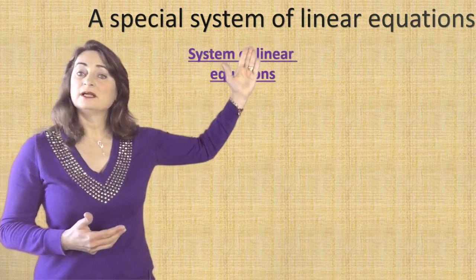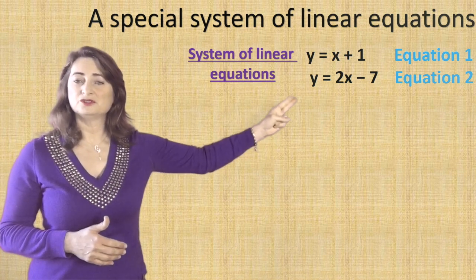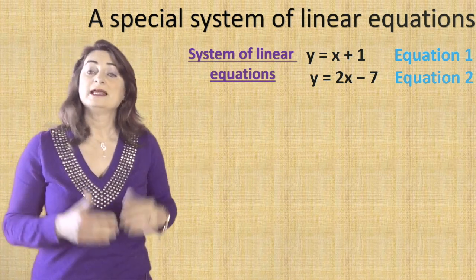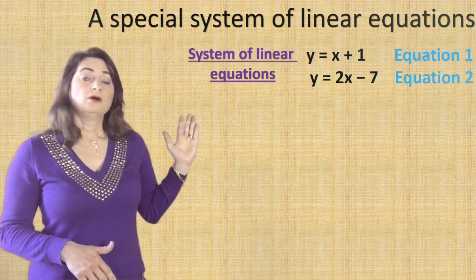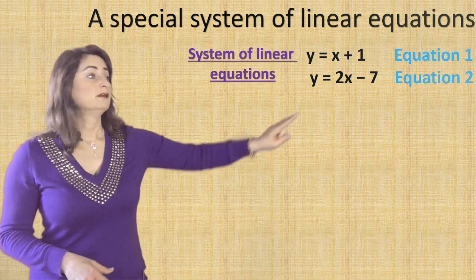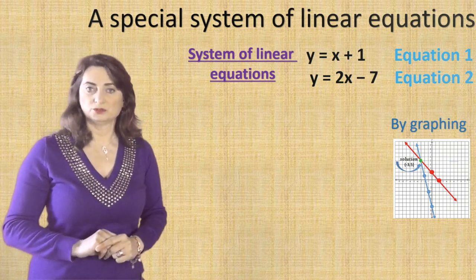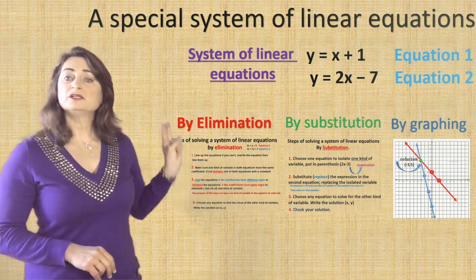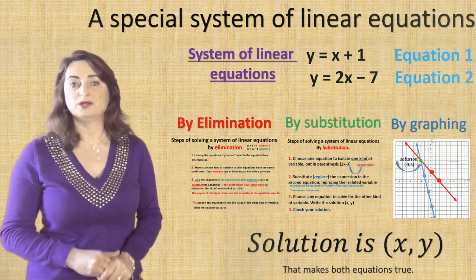A system of linear equations has at least two equations in the same variables. Equation one has x and y, and equation two also has x and y. The value of x and the value of y in both equations are the same, and that's the solution. We also learned how to solve a system of linear equations three different ways: graphically, by graphing the two equations on the same coordinate plane where the two lines intersect — that would be the solution — or algebraically, using substitution or elimination. The solution is the value of x and y that makes both equations true.